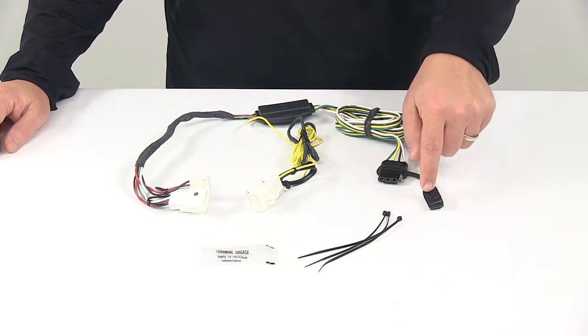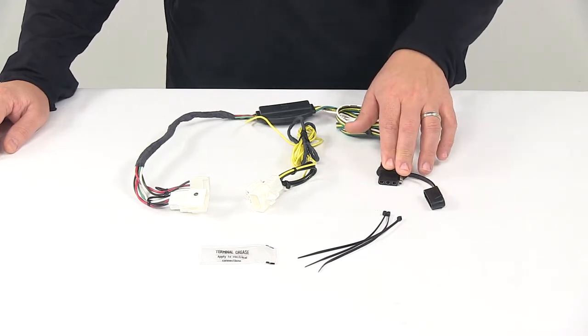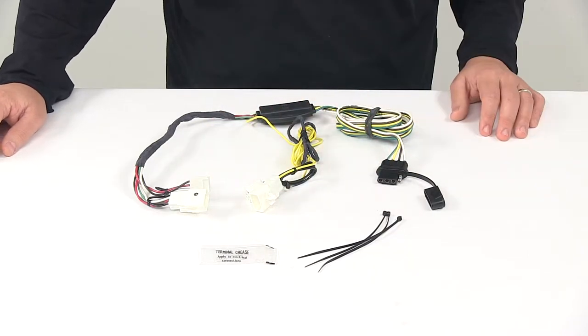The unit comes with a dust cap for the four-way flat connector to protect the terminals when it's not connected. It also comes with a terminal grease packet for electrical connections.